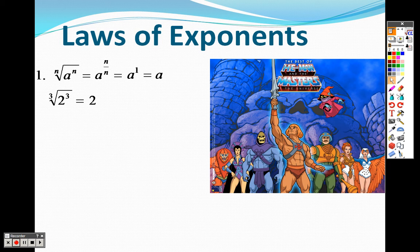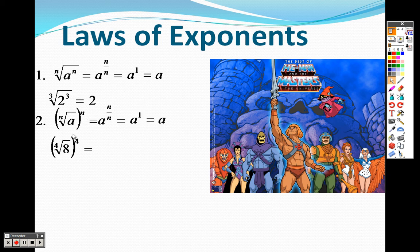The cube root of 2 cubed is like saying 2 to the 3 over 3, which is 1. Something else to keep in mind: you can rewrite it with the n on the inside or outside because it works the same way. The fourth root of 8 to the fourth power—the fourth root and the 4 will cancel out to give you 8.